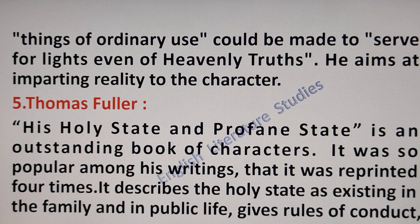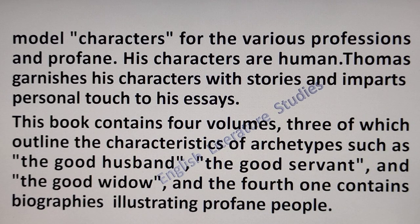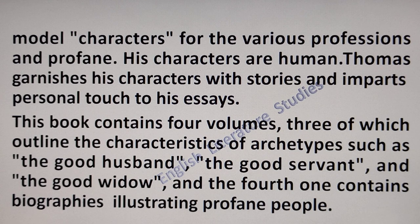The last character writer is Thomas Fuller. His Holy State and Profane State is an outstanding book of characters. It was so popular among his writings that it was reprinted four times after the first copy was sold out. It describes the Holy State as existing in the family and in public life. It also gives rules of conduct and model characters for the various professions. His characters are human, and Thomas garnishes his characters with stories and imparts a personal touch to his essays. This book contains four volumes, three of which outline the characteristics of archetypes such as good husband, good servant, and good builder, and the fourth contains biographies illustrating profane people.